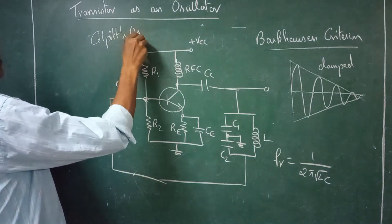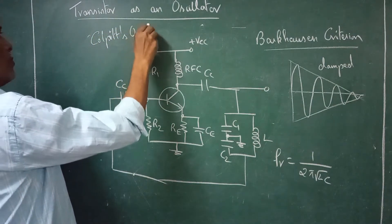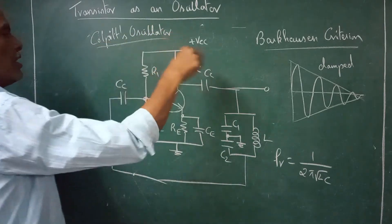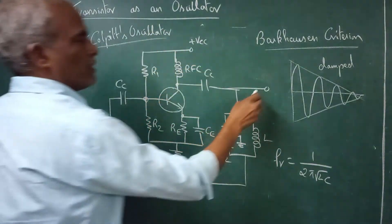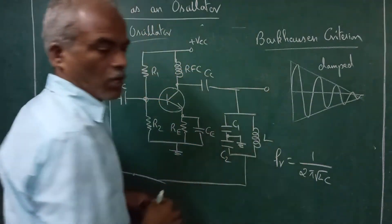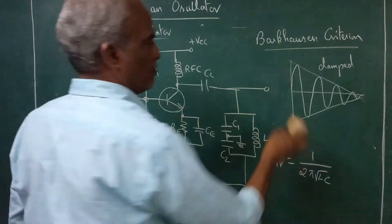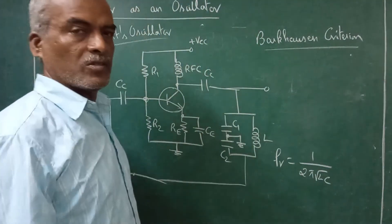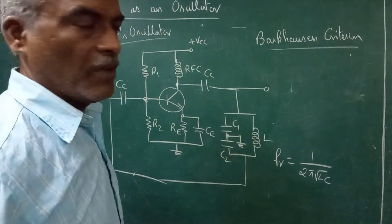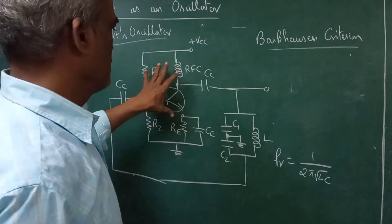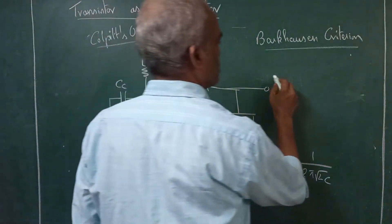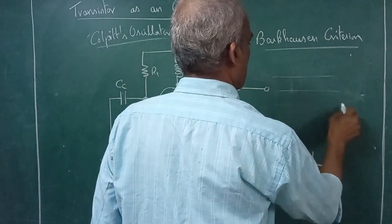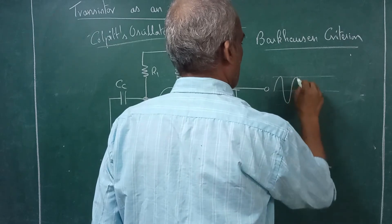Colpitts oscillator — this will produce sinusoidal waveform. At the output you will get a sinusoidal waveform — an undamped sinusoidal waveform, because you have an amplifier.